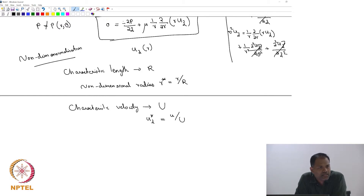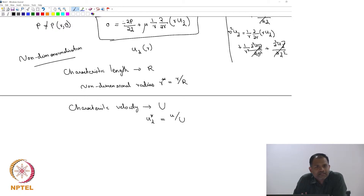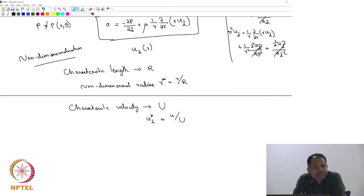dp/dz is just a constant that has been applied. Why is dp/dz a constant? The argument is: imagine there are only two terms — one is a function of radius and the other is a function of z. If two terms are equal and one is a function of radius while the other is a function of z, then the only possibility is that each of them is constant. That is the same argument we used for 2D flow. So dp/dz is a constant.